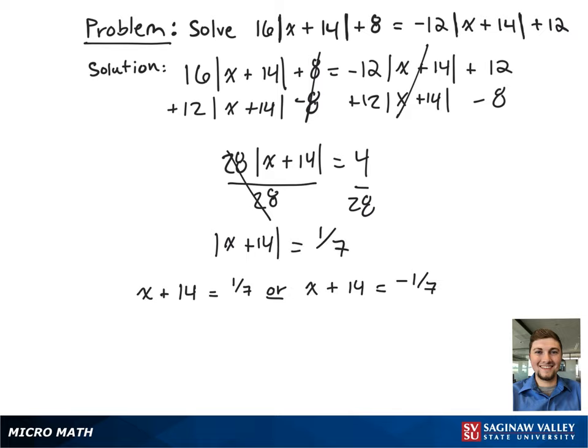Now that we have the absolute value term by itself, we can rewrite as x plus 14 equals 1 seventh or x plus 14 equals negative 1 seventh.